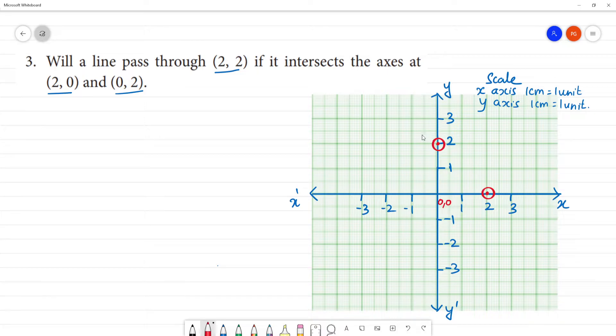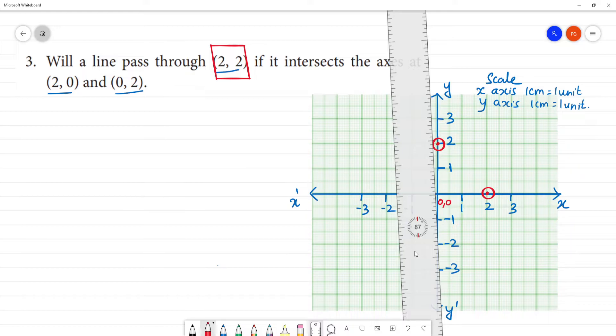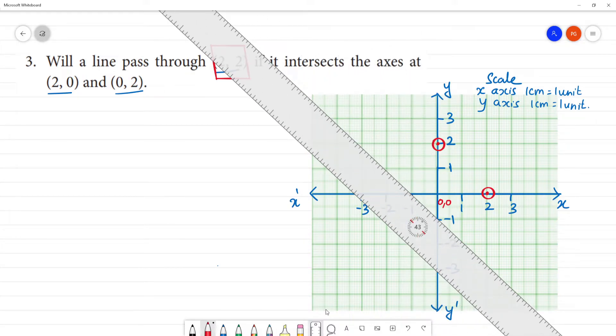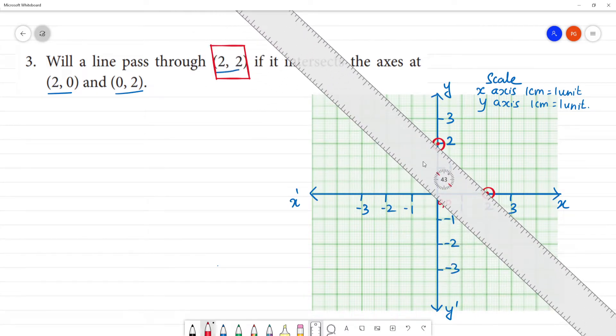If we mark the points and draw the line, will it pass through (2,2)? Let's see where the line goes. It will not pass through the point.